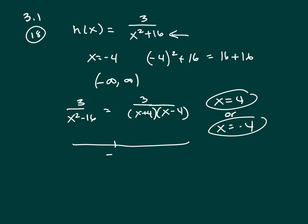So if you look at that on the number line, here's negative 4 and 4. We can't let it be those values, but it could be anything else. So your domain for this particular problem would be negative infinity, negative 4.